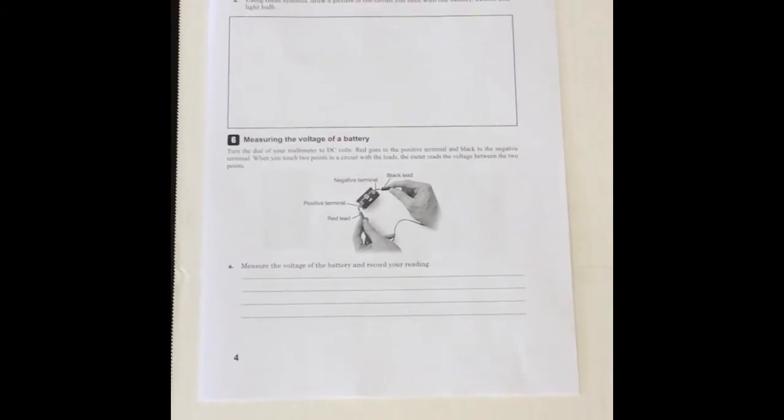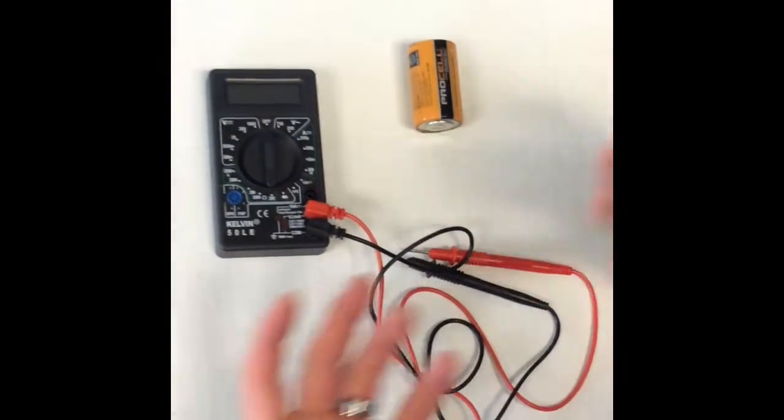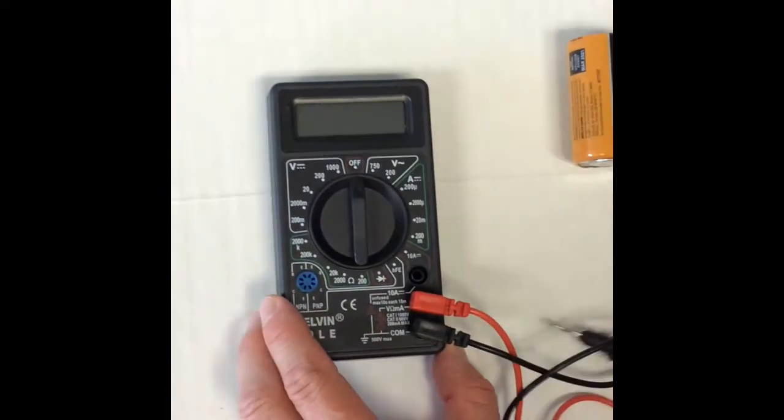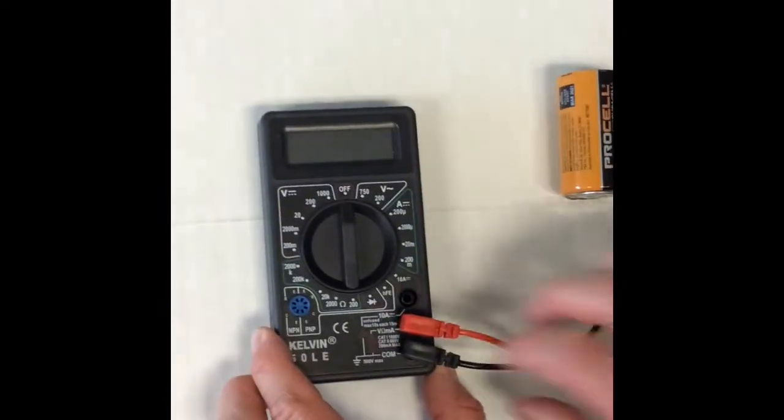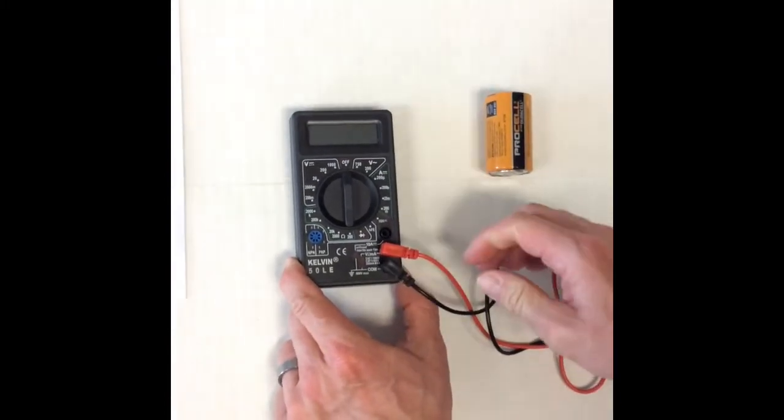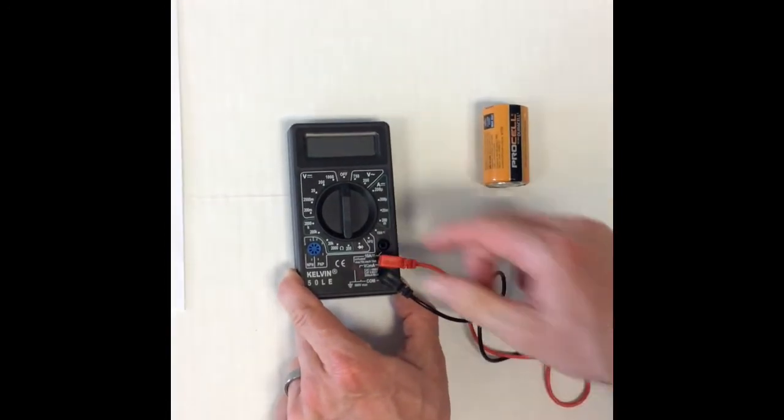Welcome back, folks. Right now, we're looking at measuring voltage of a battery. We know the battery has some energy in it. We need to figure out how much energy it is. So what we do is we take our multimeter, make sure our plugs are plugged in correctly. For this one, our black wire is at the bottom, pressed firmly in. Our red one is connected in the middle. Again, pressed very firmly in.